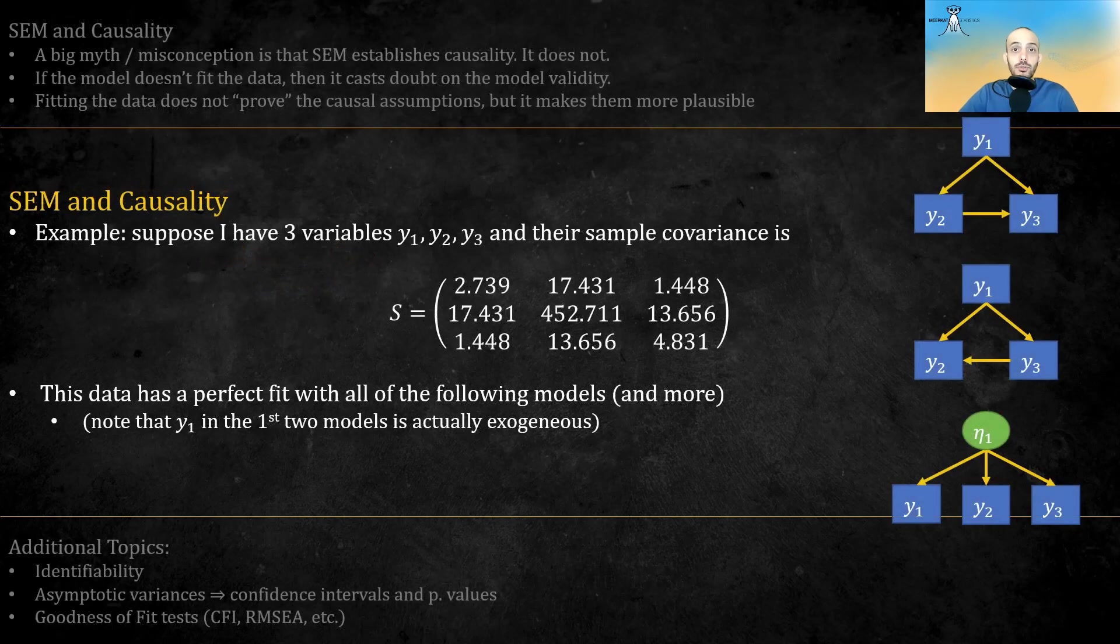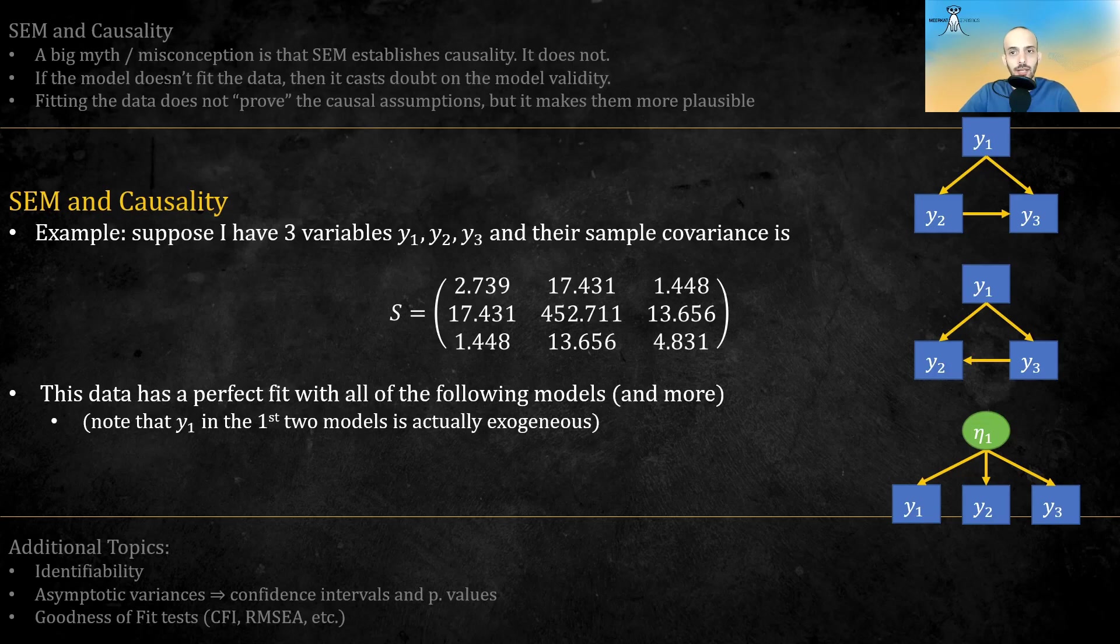Here's an example that proves it. For the same covariance matrix, numerous models or structures exist that fit the data perfectly. Here I show three possible ones. For more information, check chapter 3 of Bolin's book, Structural Equations with Latent Variables.